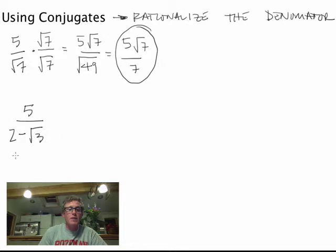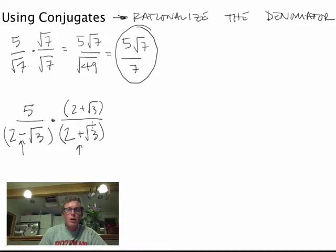And what that is is times 2 plus root 3. And the only thing I changed is this sign right here. And then upstairs, I'm going to do 2 plus root 3 as well. And so now this whole thing, I'm going to say little baby equals 1, right? So nothing's changed there.